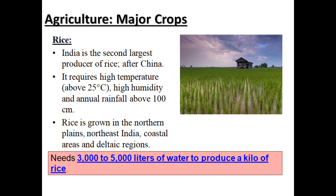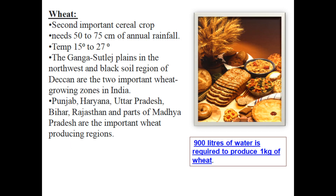Wheat is the second important cereal food crop. In the north, wheat is the main food crop. It needs 50 to 75 centimeters of annual rainfall and a temperature range of 15 to 27 degrees Celsius. The Ganga-Satluj plains in the northwest and the black soil region of the Deccan are the two important wheat growing zones in India.